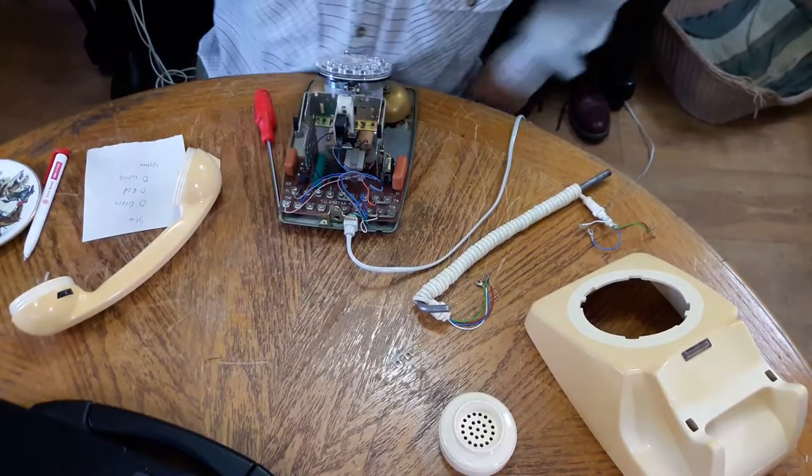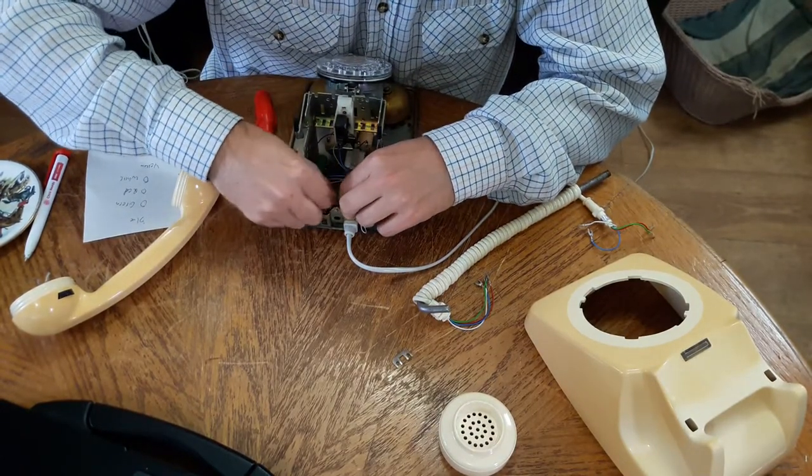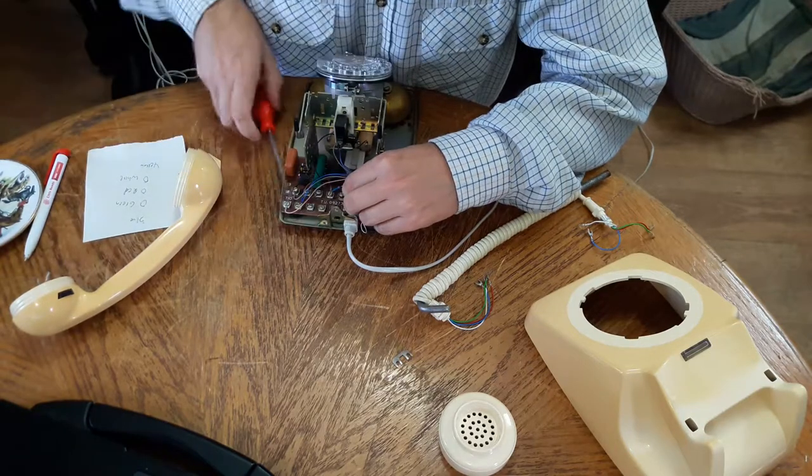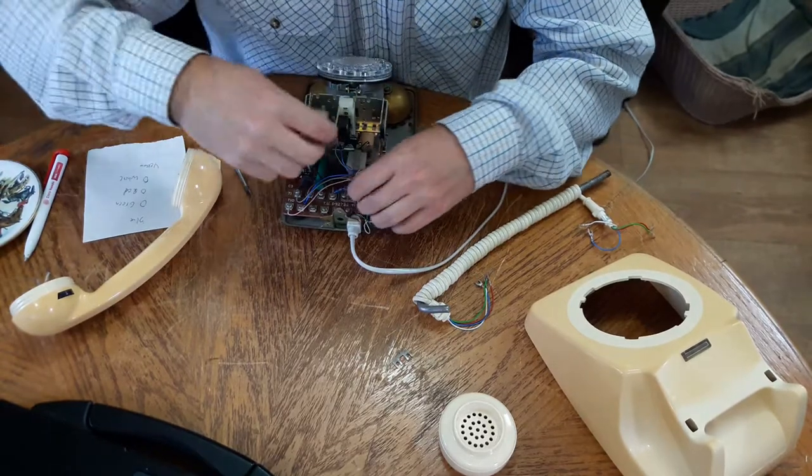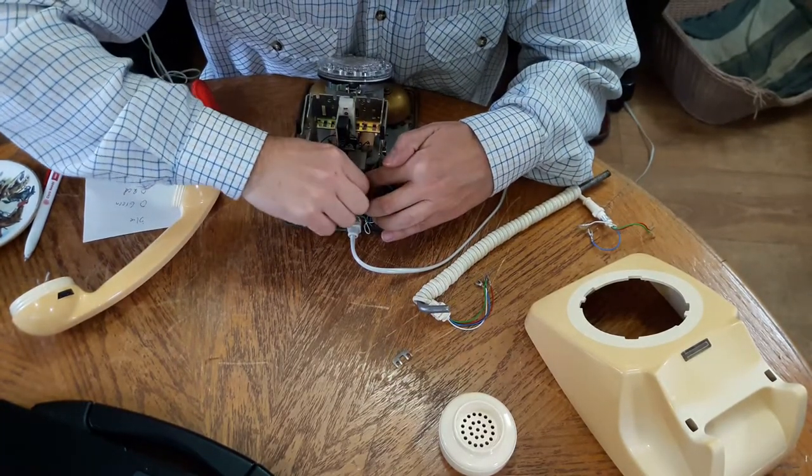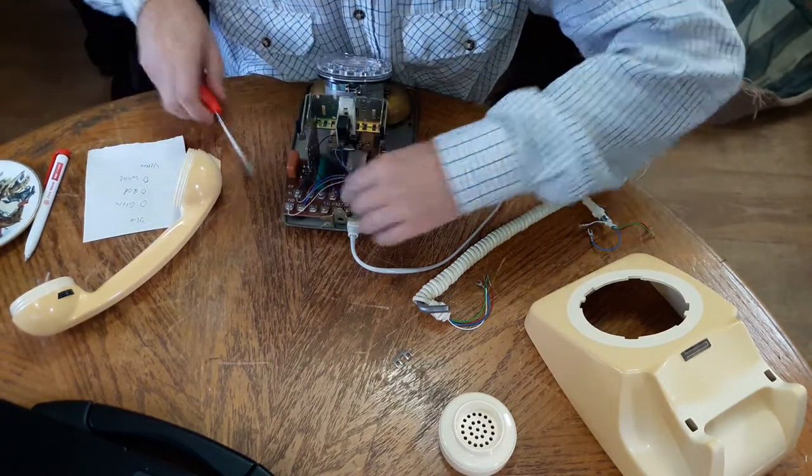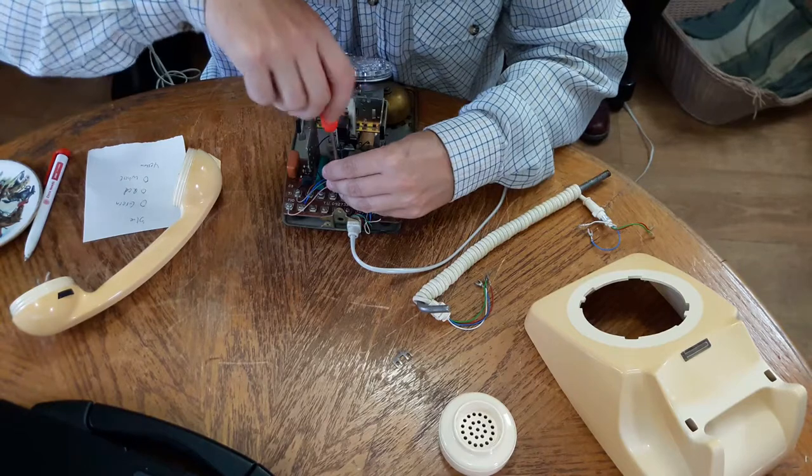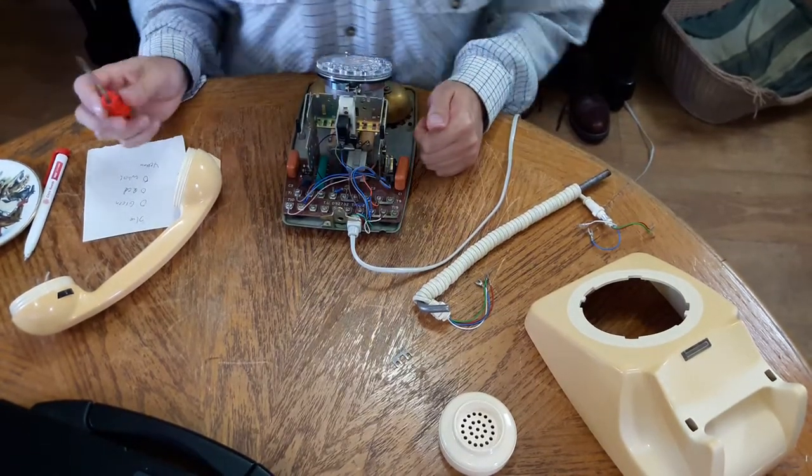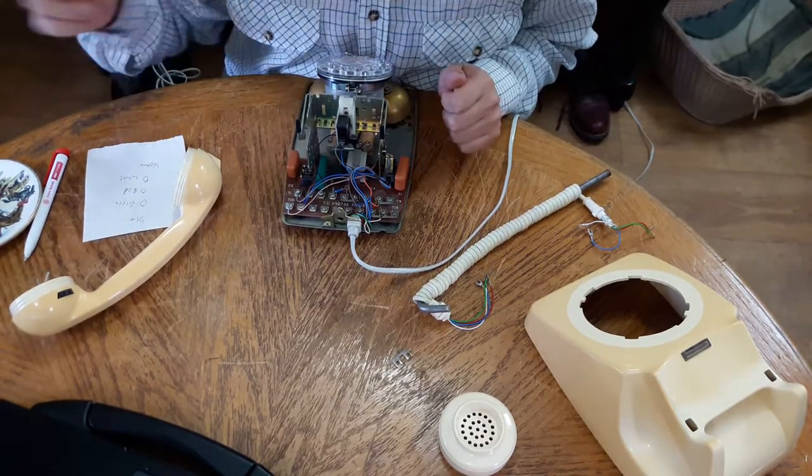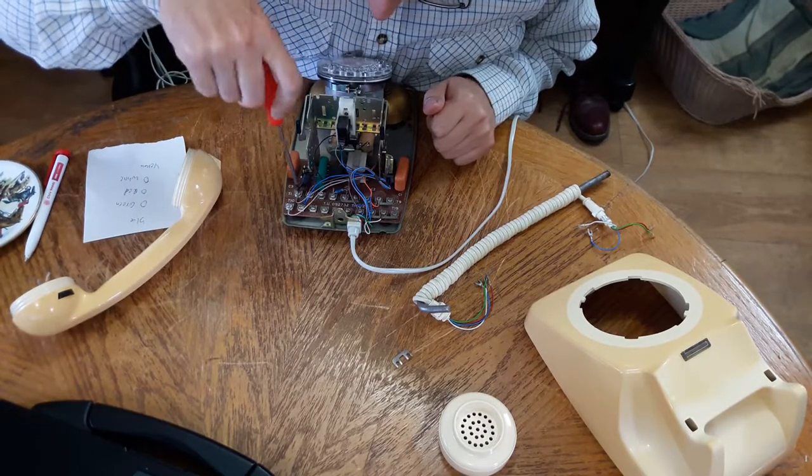So basically we want to wrap this around the terminals at 4 and 5. It can be quite fiddly to get your hands in these. And insert a rectifier between terminals 1 and 2, which is already there.